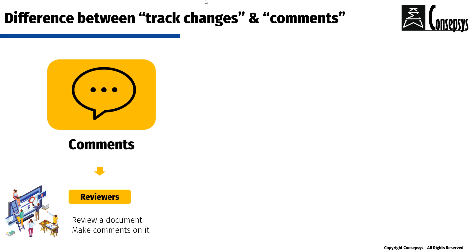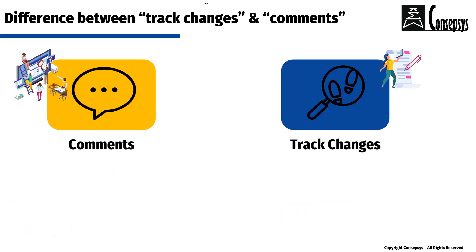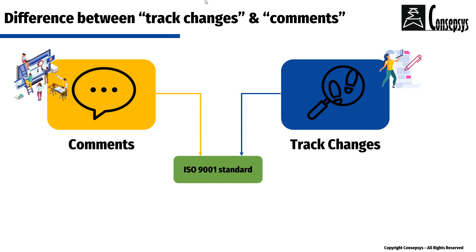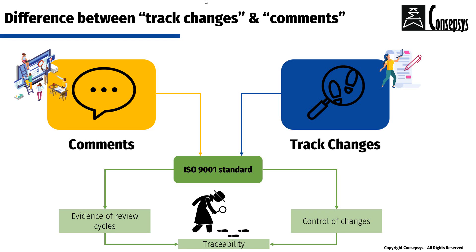To summarize: comments allow reviewers to review a document and make comments on it. Track changes allow the author to highlight what was changed in the document once they have modified it. Both are necessary as per the ISO 9001 standard, but they cover different requirements of that standard. Records of comments made are part of the measures taken to have evidence of product review, while track changes are part of the measures taken to have control of changes — and both are critical to ensure traceability and auditability.